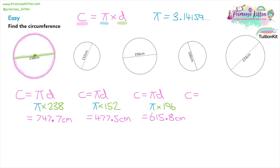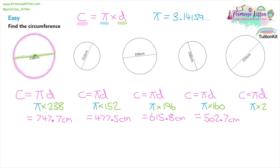Question four: circumference equals pi times the diameter. Substituting, we do pi multiplied by 160, which gives 502.7 centimetres to one decimal place — the second decimal is 5 so we round up. Question five: the same process with diameter 224, giving 703.7 centimetres. For these first circumference questions it's all about remembering the formula and knowing which numbers to substitute.